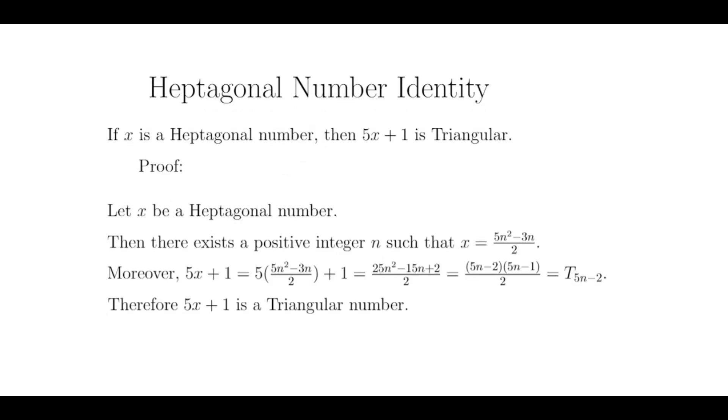Now for that identity. If the positive integer x is a heptagonal number, then 5 times x plus 1 is triangular. To prove this, we will need to use a little algebra and the formula we have seen for heptagonal numbers.